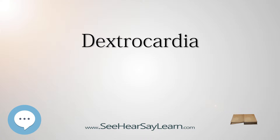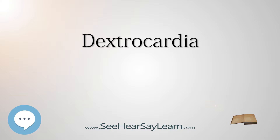Dextrocardia situs inversus refers to the heart being a mirror image situated on the right side. For all visceral organs to be mirrored, the correct term is dextrocardia situs inversus totalis. Although statistically people with dextrocardia do not have any medical problems from the disorder, they may be prone to a number of bowel, esophageal, bronchial and cardiovascular disorders, such as double outlet right ventricle, endocardial cushion defect, and pulmonary stenosis.